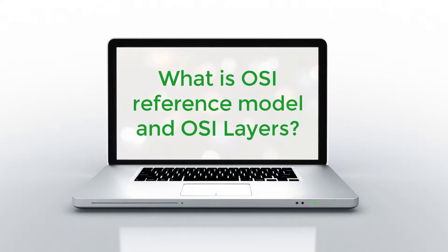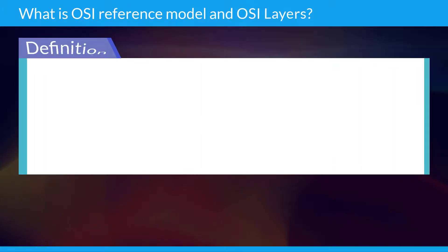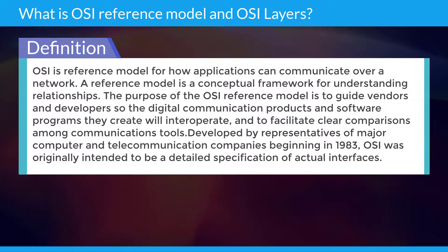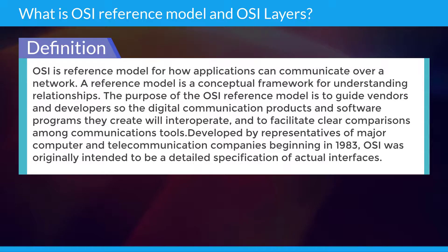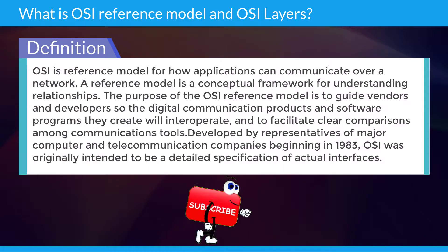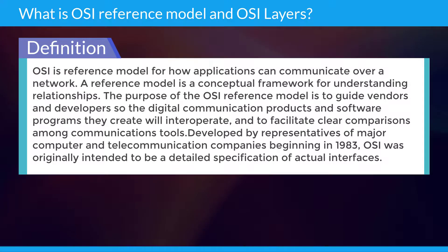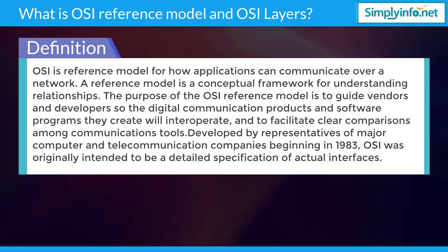What is the OSI reference model and OSI layers? OSI is a reference model for how applications can communicate over a network. A reference model is a conceptual framework for understanding relationships. The purpose of the OSI reference model is to guide vendors and developers so the digital communication products and software programs they create will interoperate, and to facilitate clear comparisons among communication tools.